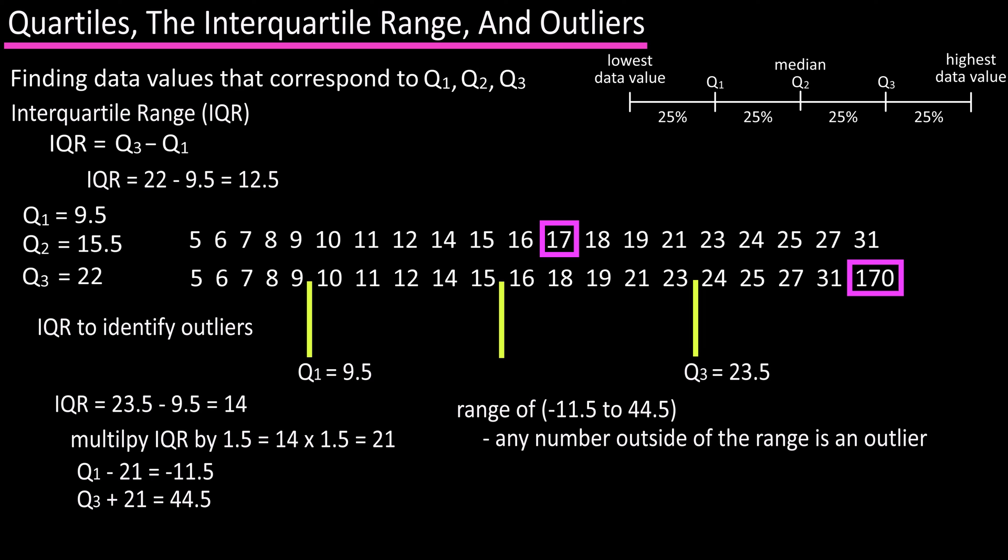The rules for this procedure are that an outlier is any data value that is smaller than Q1 minus 1.5 times the IQR, or an outlier is any data value that is larger than Q3 plus 1.5 times the IQR.